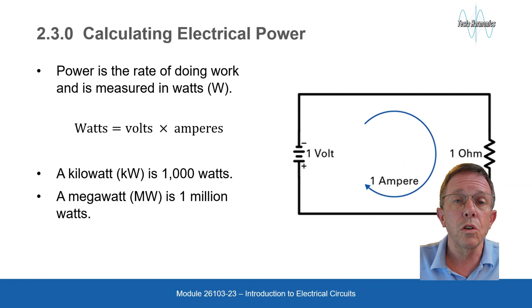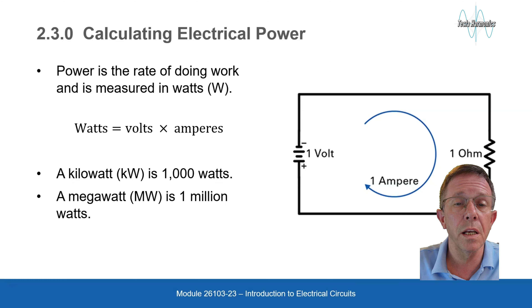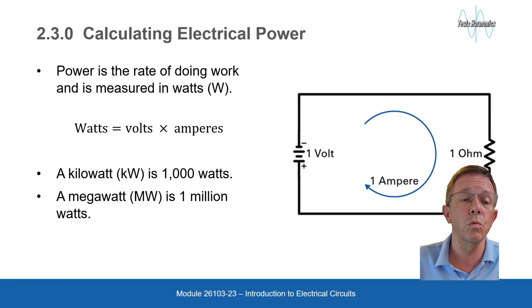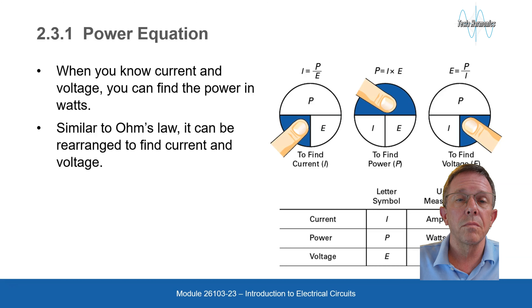Calculating electrical power: power is the rate of doing work and is measured in watts, W. Watts equals volts times amperes. A kilowatt, kW, is 1,000 watts; a megawatt, MW, is 1 million watts. When you know current and voltage, you can find the power in watts. Similar to Ohm's law, the power formula can be rearranged to find current and voltage.